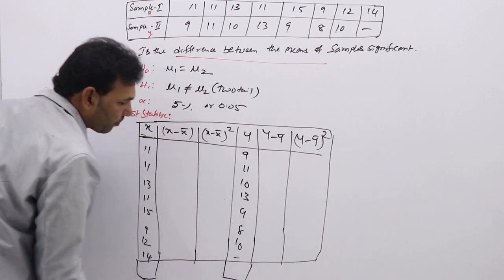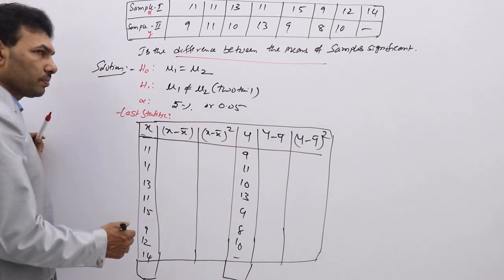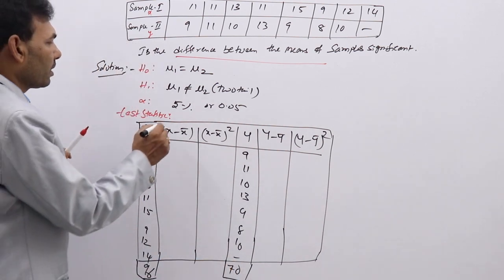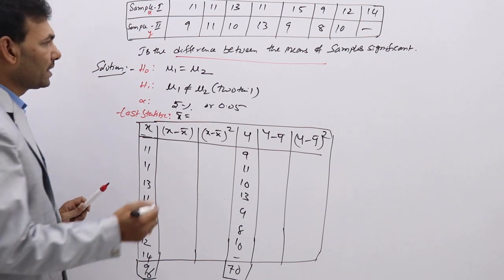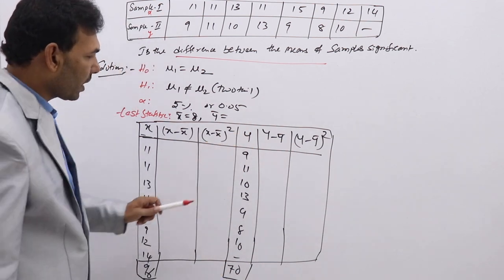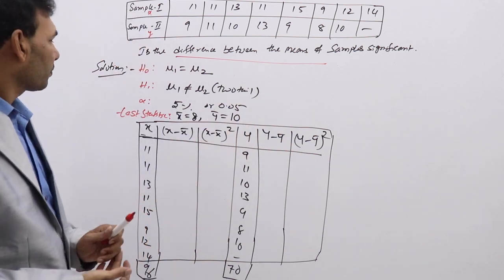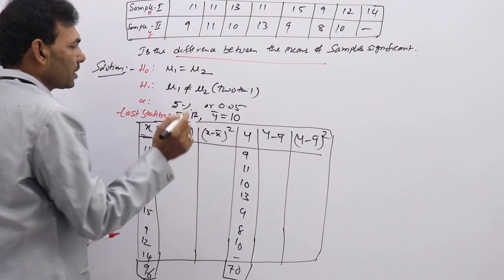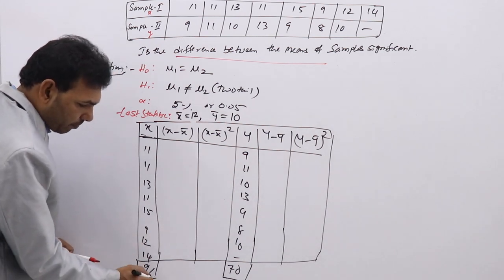The Y values are: 9, 11, 10, 13, 9, 8, 10. Now calculate the totals: X total = 96, Y total = 70. From these, X-bar = 96/8 = 12, Y-bar = 70/7 = 10.